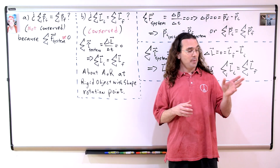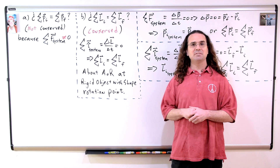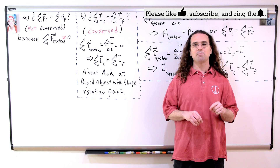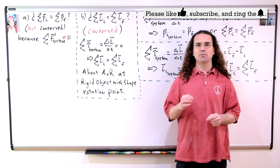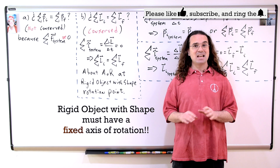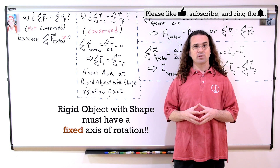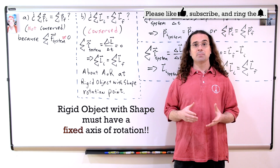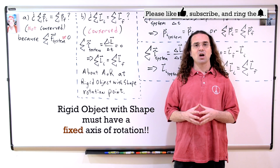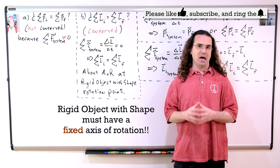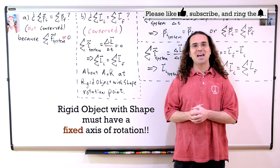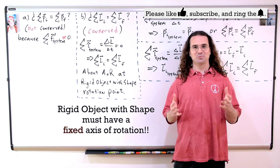That is absolutely correct. We have just shown that during a collision between a point particle and a rigid object with shape, linear momentum is not conserved for the system and angular momentum is conserved about the axis of rotation of the rigid object. Thank you very much for learning with me today. I enjoyed learning with you.